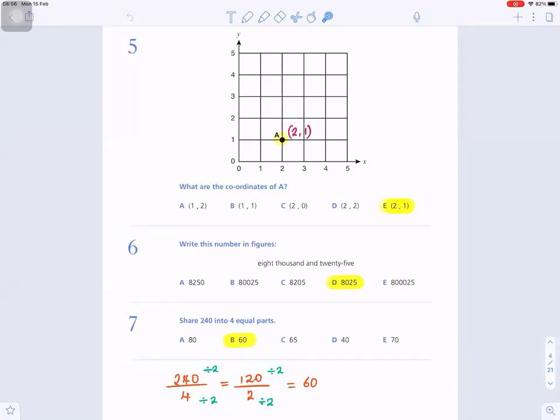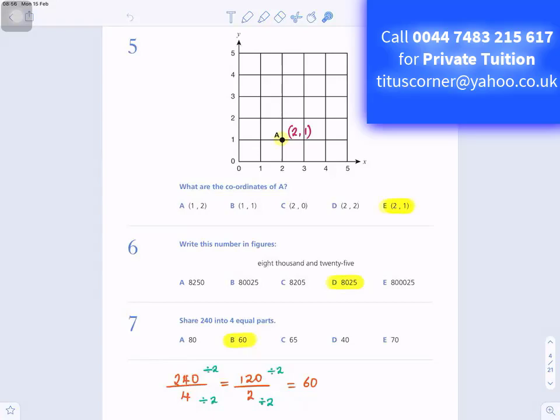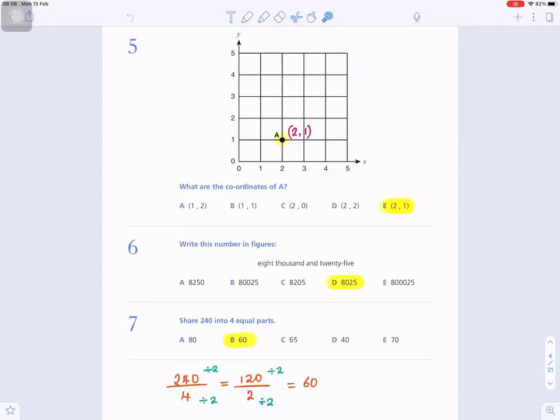Question 6: Write this number in figures - 8025. The answer is D. Question 7: Share 240 into 4 equal parts. 240 divided by 4. I've done it below. I write 240 at the top and for the denominator, because they are even numbers, I have to break it down to make smaller numbers before I divide. Half of 240 is 120, half of 4 is 2. Because it's even numbers again, half of 120 is 60 and half of 2 is 1. So 60 divided by 1 is 60. That stops you from trying to do long division.